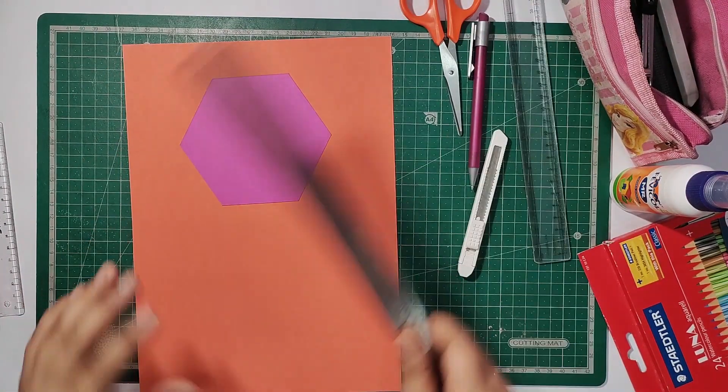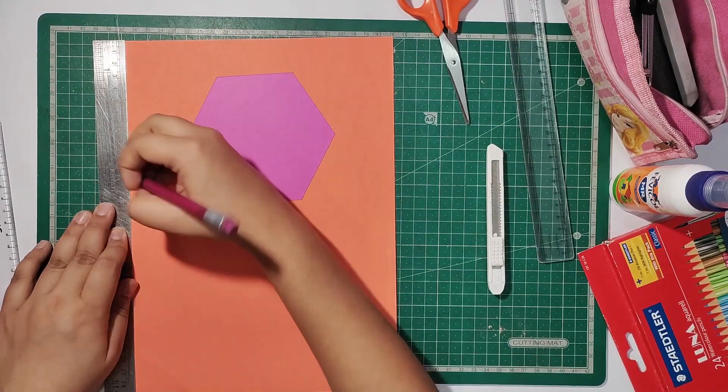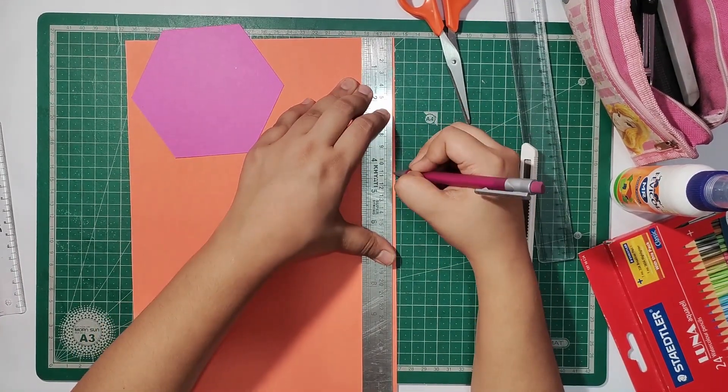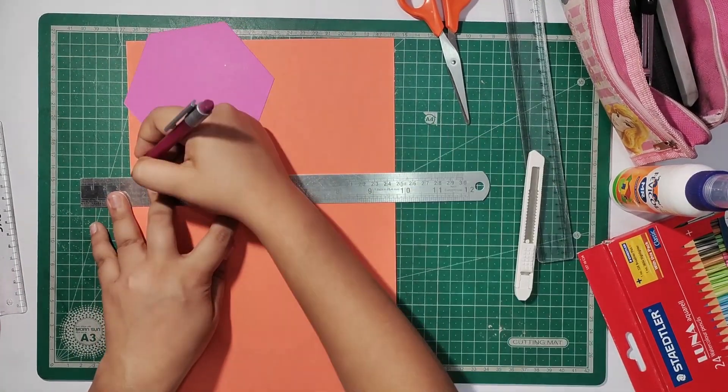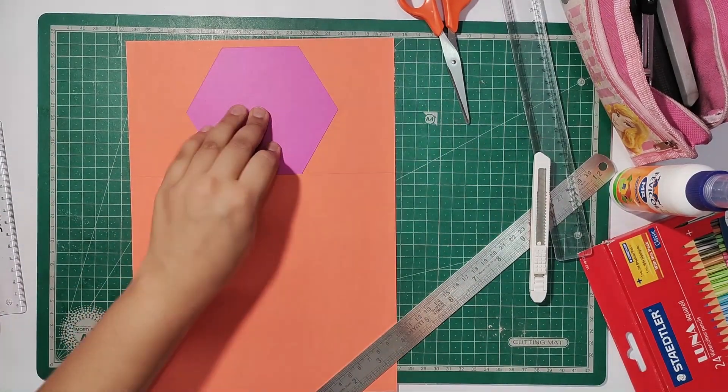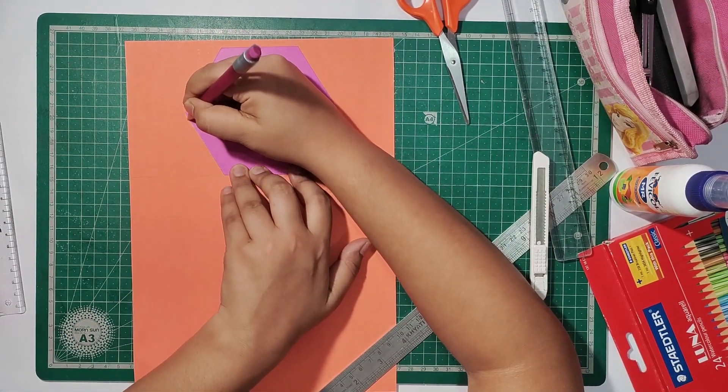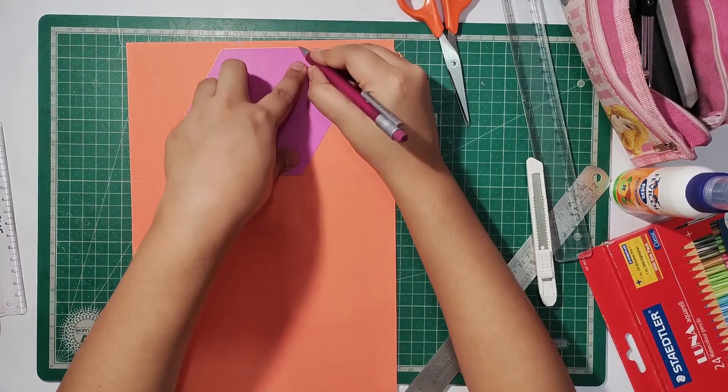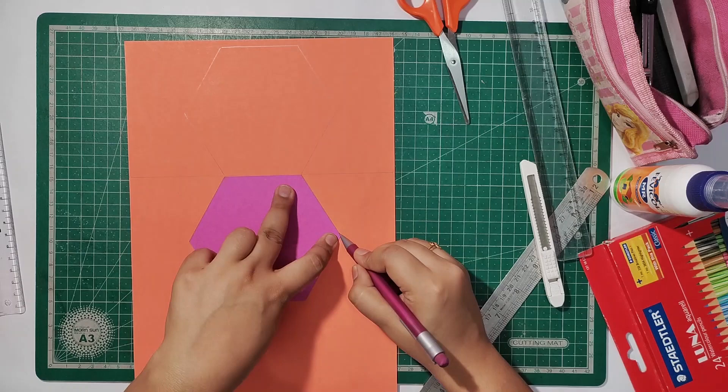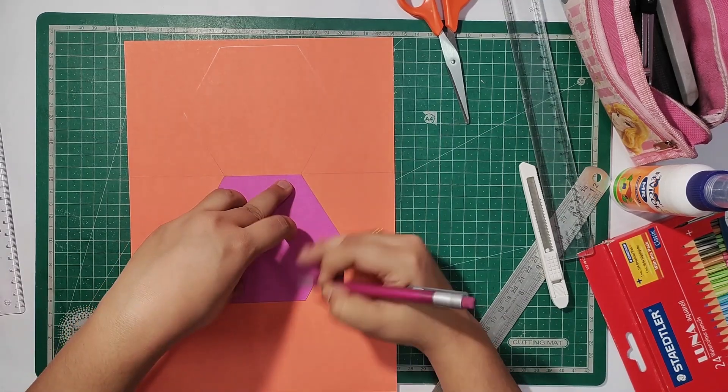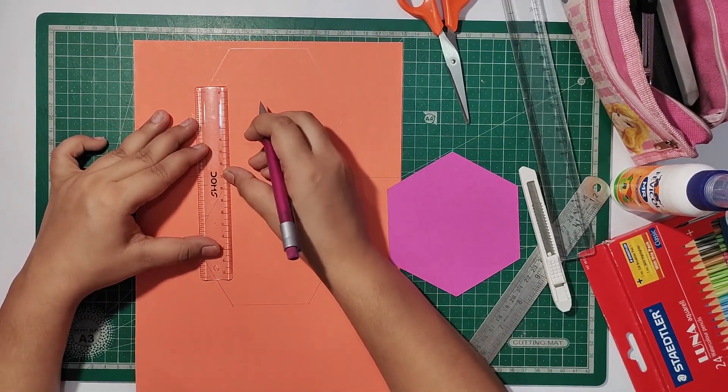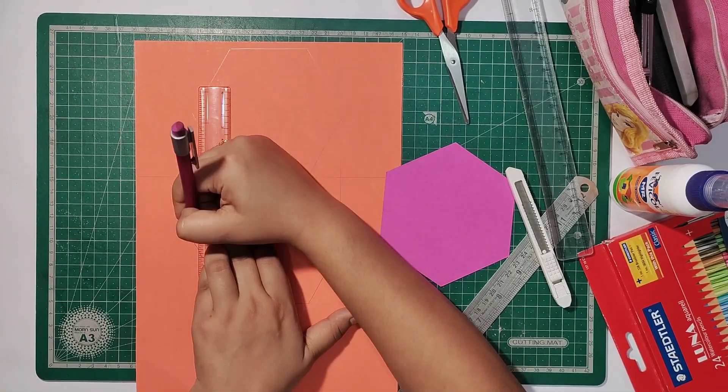After cutting the template, now we come to our main paper. Place the hexagonal shape in this position and trace it. Here we will make a card from both sides, so trace the shape on both sides of the card.